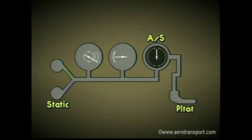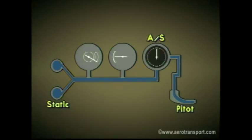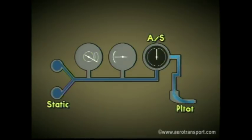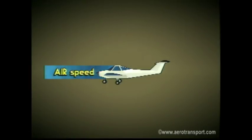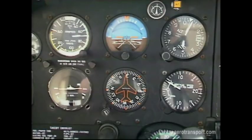The airspeed indicator is connected to both the pitot tube and the static pressure tube. This instrument measures the difference in air pressure between the two tubes. While on the ground, not moving, the pressure in the two lines would be the same and thus register zero on the airspeed gauge. But while in motion, the pressure builds in the pitot tube. This pressure differential is read on the gauge as the indicated airspeed — the speed the aircraft is traveling through the air, not over the ground. The gauge is calibrated in both knots and miles per hour.